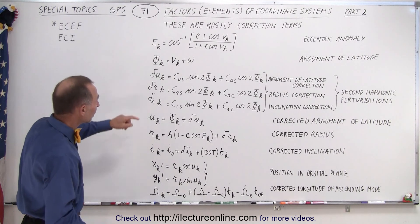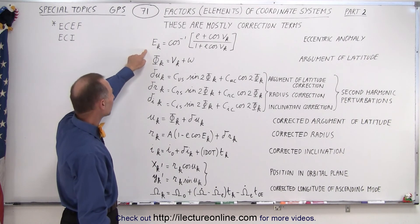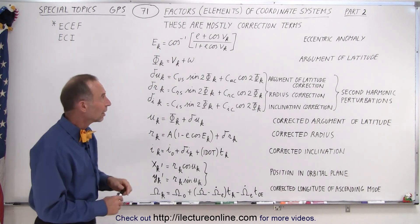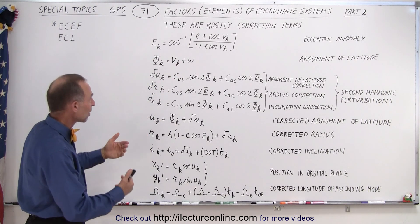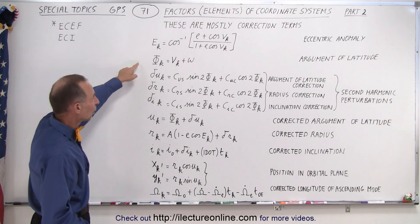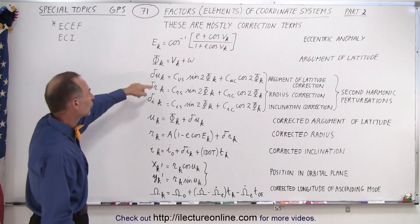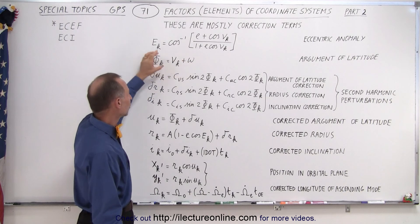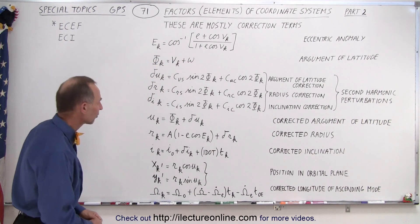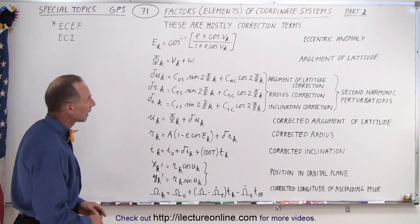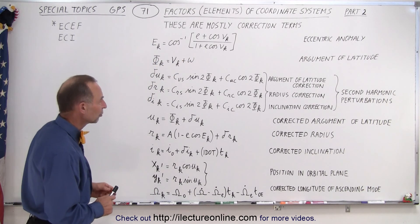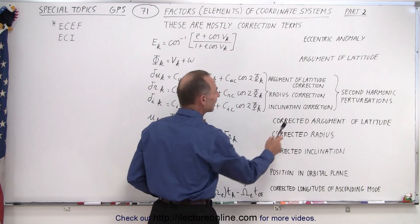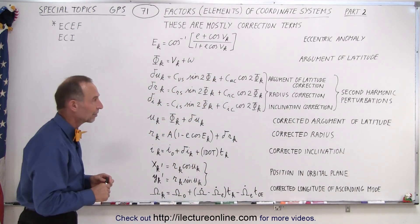The first one is the eccentric anomaly — there are some slight changes in the eccentricity of the orbits, and we want to keep track of that. We also have an argument of latitude, which is relative to the argument of the perigee, so we have another correction constant there. We also have corrections for latitude, radius, and inclination of the orbit of the satellites.